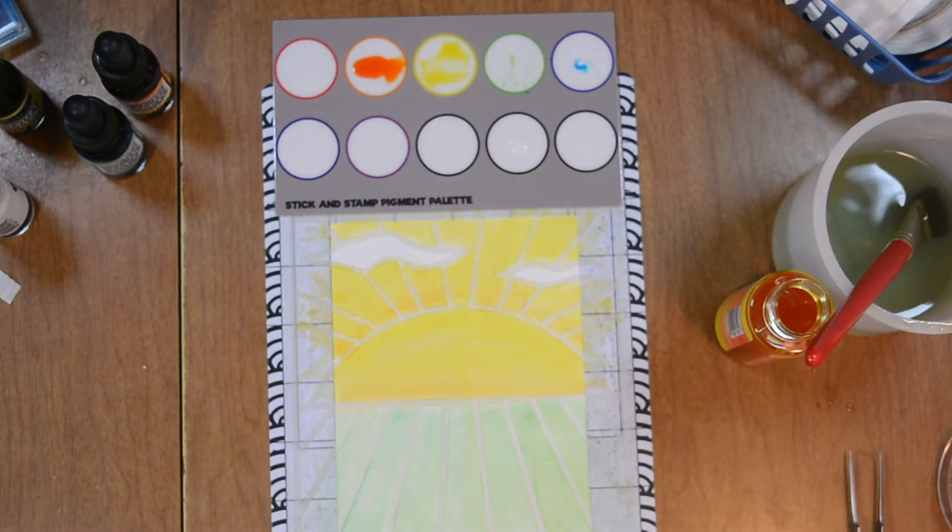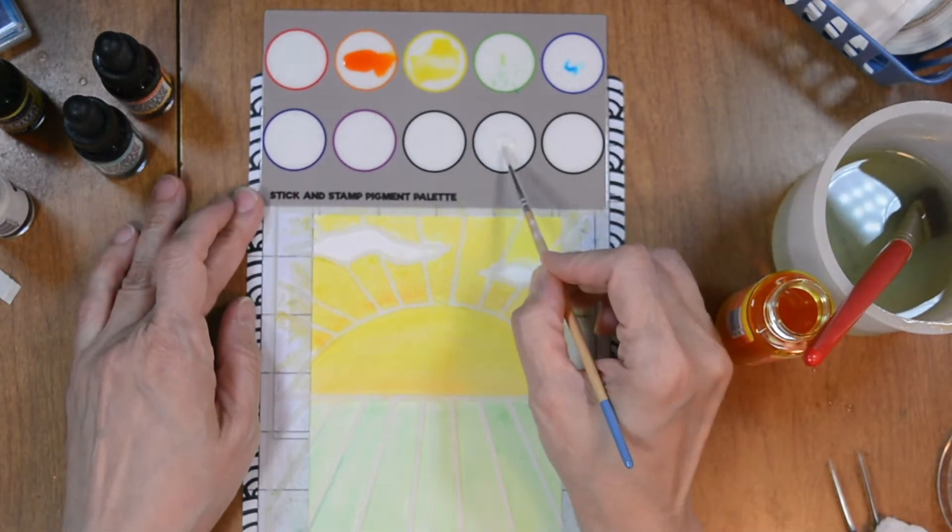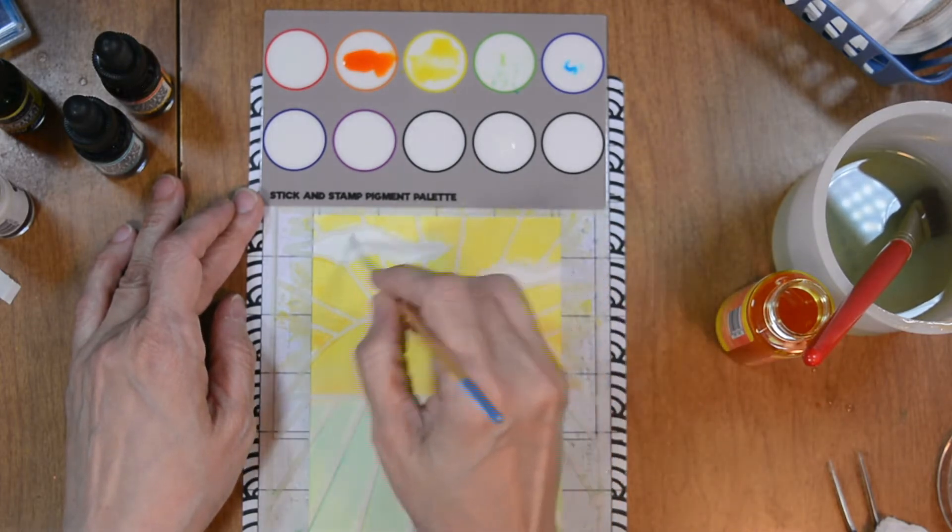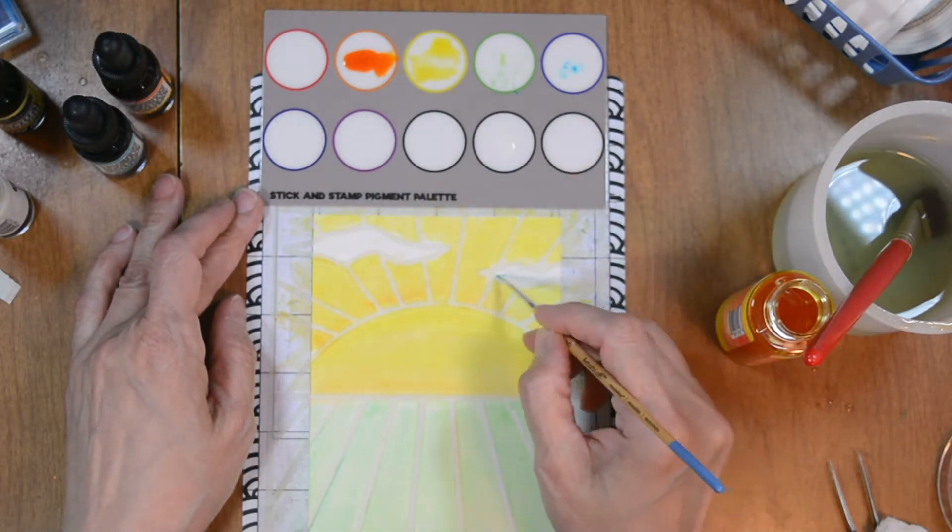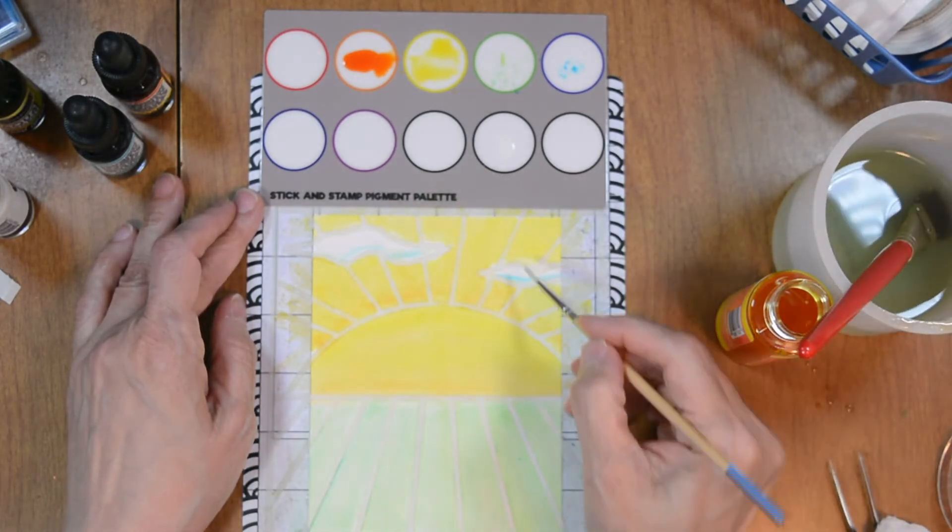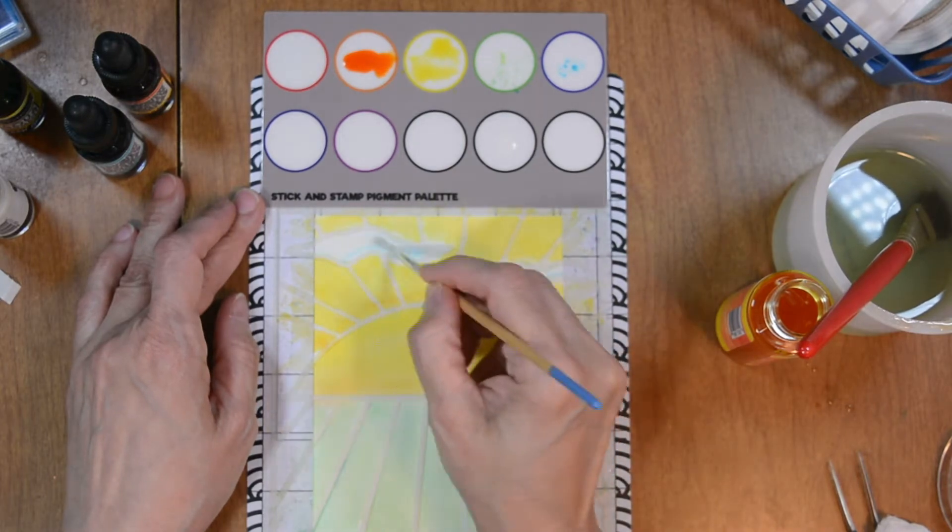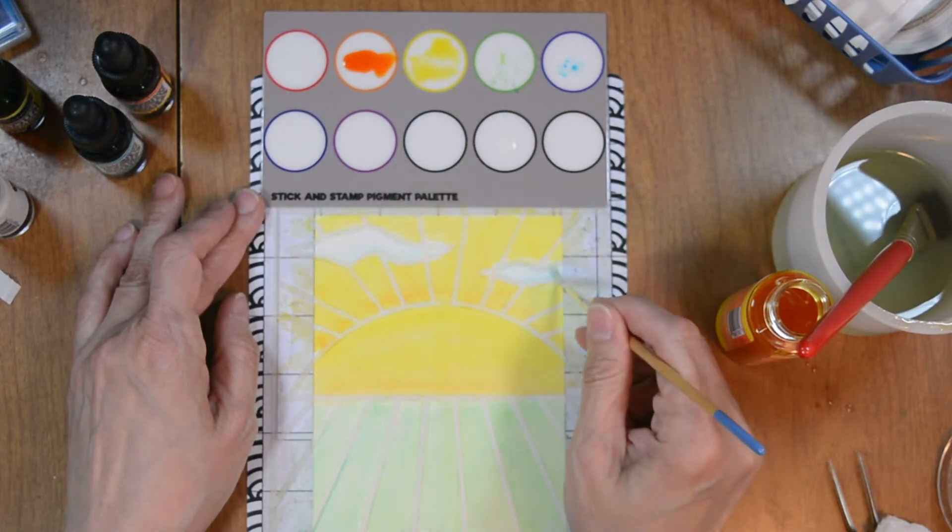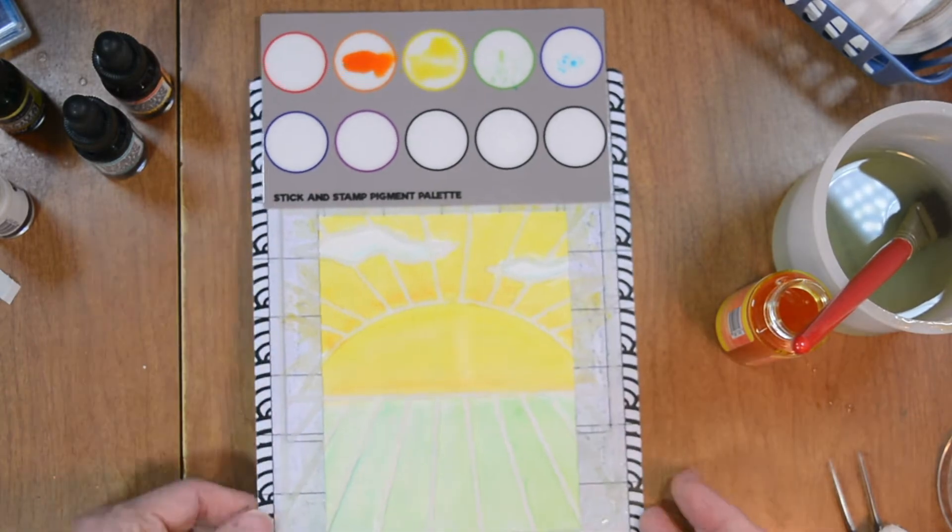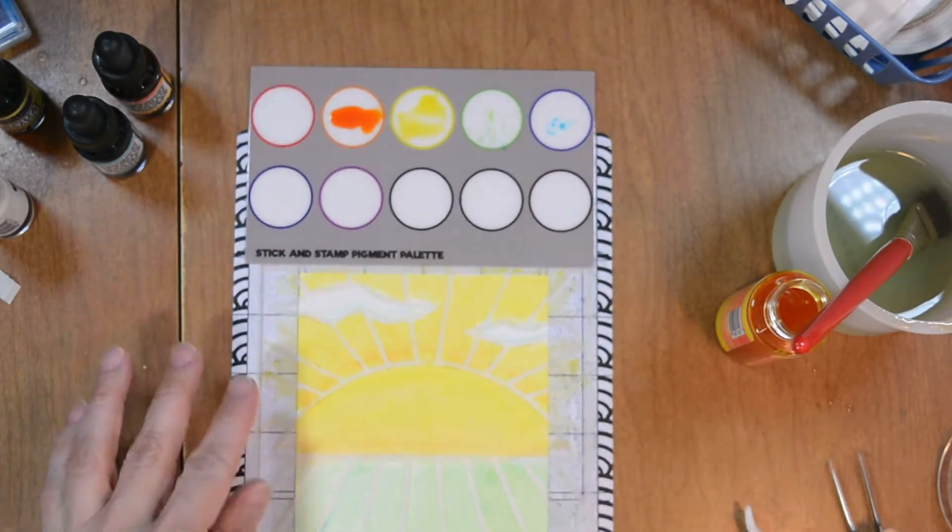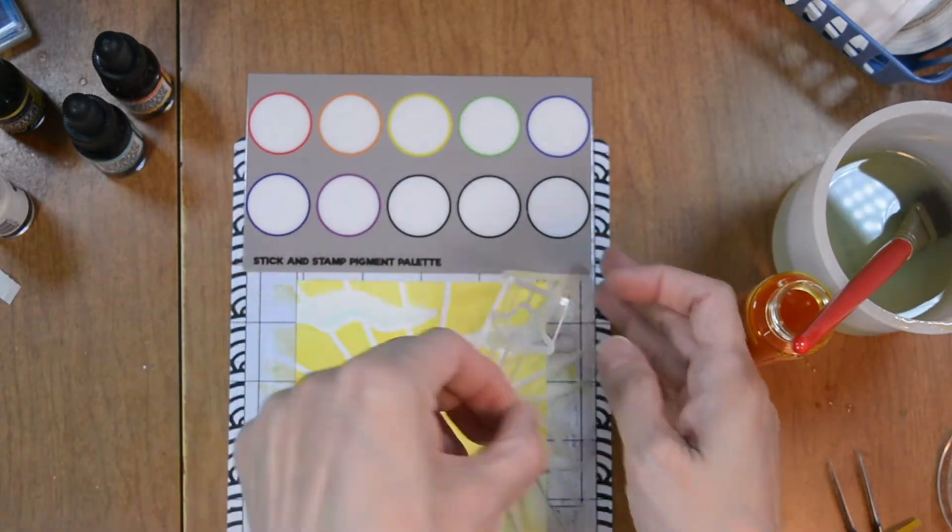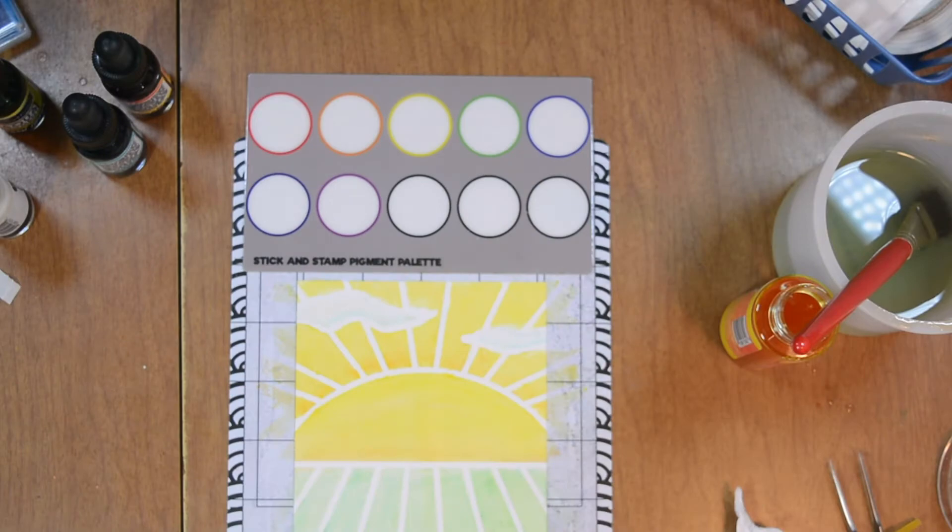Once I have that to the desired color, I'm going to move on to our clouds. For our clouds, I'm going to use the white aqua pigment to fill it in. Then I'll pull in just a hint of this turquoise, just to add a little extra dimension towards the bottom of our clouds, just like a little blue peeking through. I'm going to keep mixing that until I have it how I would like it.